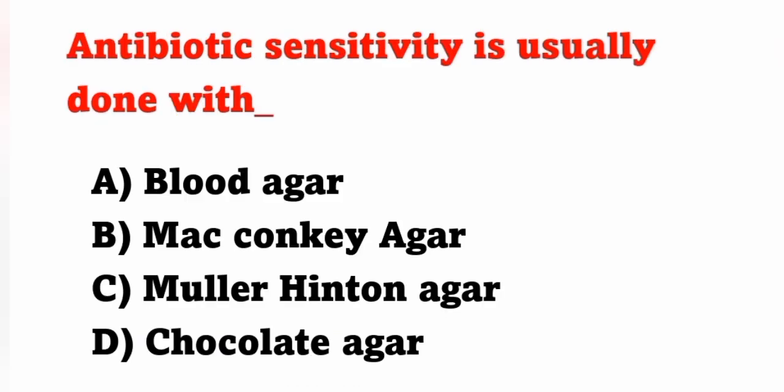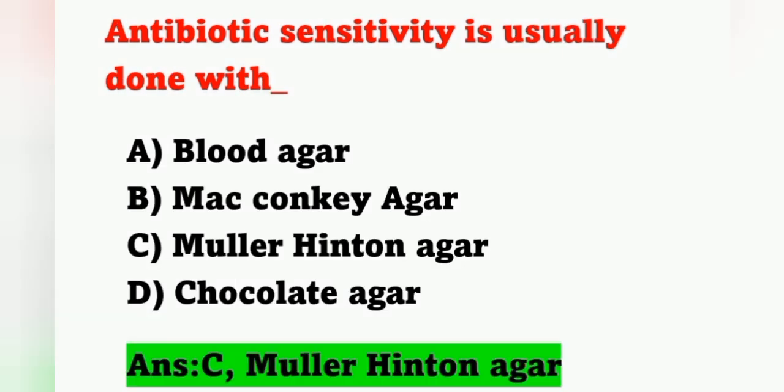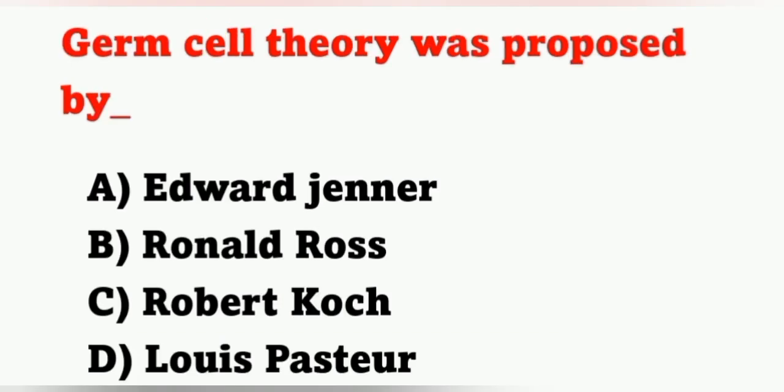Next question: antibiotic sensitivity is usually done with — option A: blood agar, option B: MacConkey agar, option C: Muller-Hinton agar, option D: chocolate agar. Which media is used to find out antibiotic sensitivity? It is Muller-Hinton agar. Option C is the correct answer.